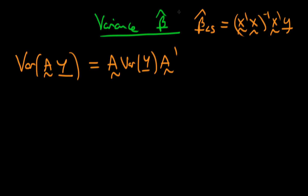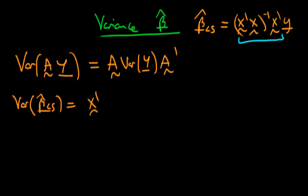Using this particular relationship, we can write out what the variance of beta hat least squares is. We can think of the first term as being the matrix A. So when I find the variance of beta hat least squares, I just get A — which is (X'X)⁻¹ times X' — times the variance of Y.